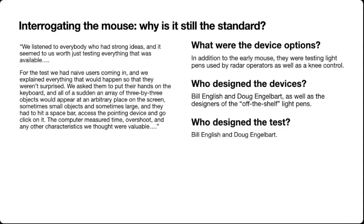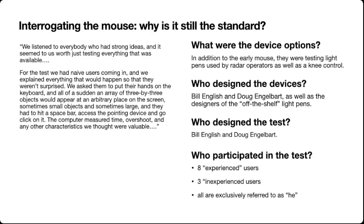I have personally read this story about the brilliance of the invention of the mouse a dozen times. When Bill English died a few years ago, there were tons of glowing articles in seemingly every tech and design blog about how important this process was. So I eventually decided to look up the original paper written about this experiment. In addition to the early mouse, they were testing a light pen used by radar operators, as well as a knee control they designed. The traditional narrative is that they tested a bunch of naive users to see what worked best — but the reality is there were only 11 participants in the study.